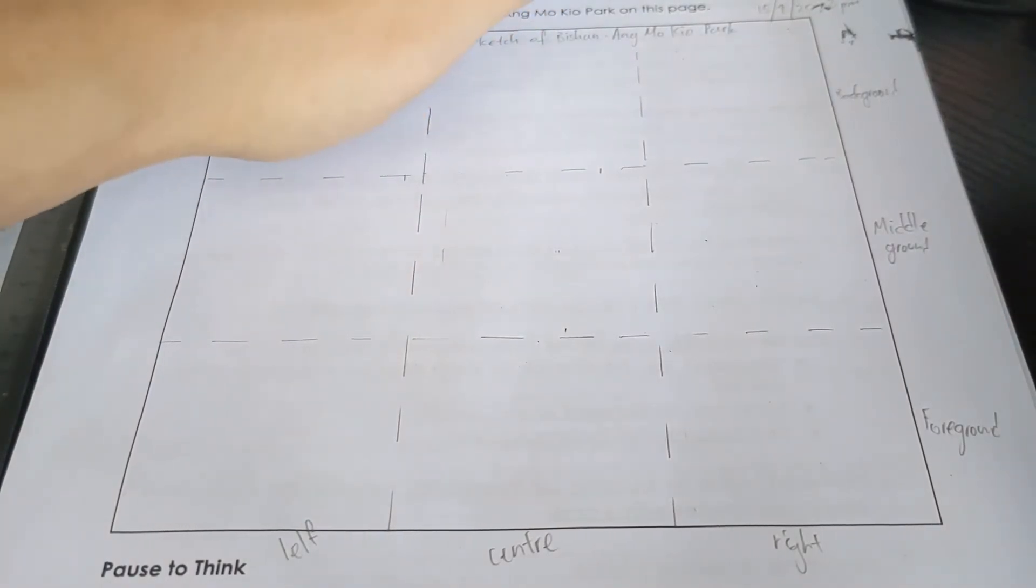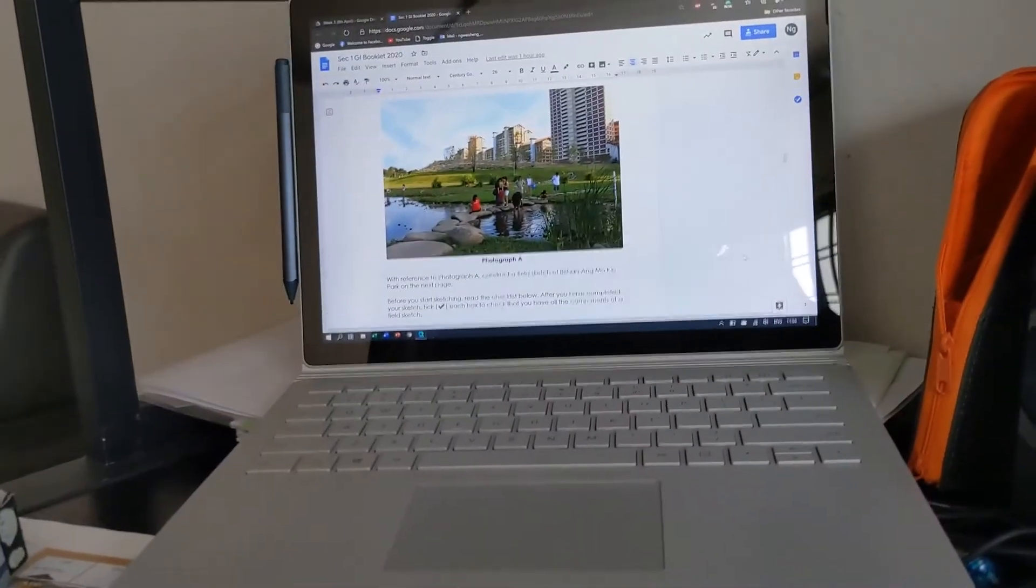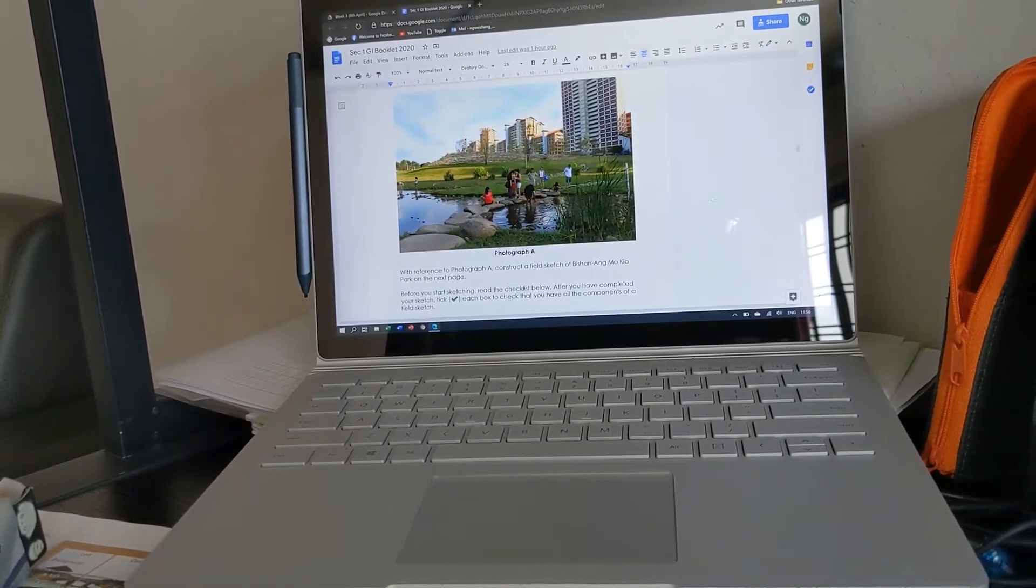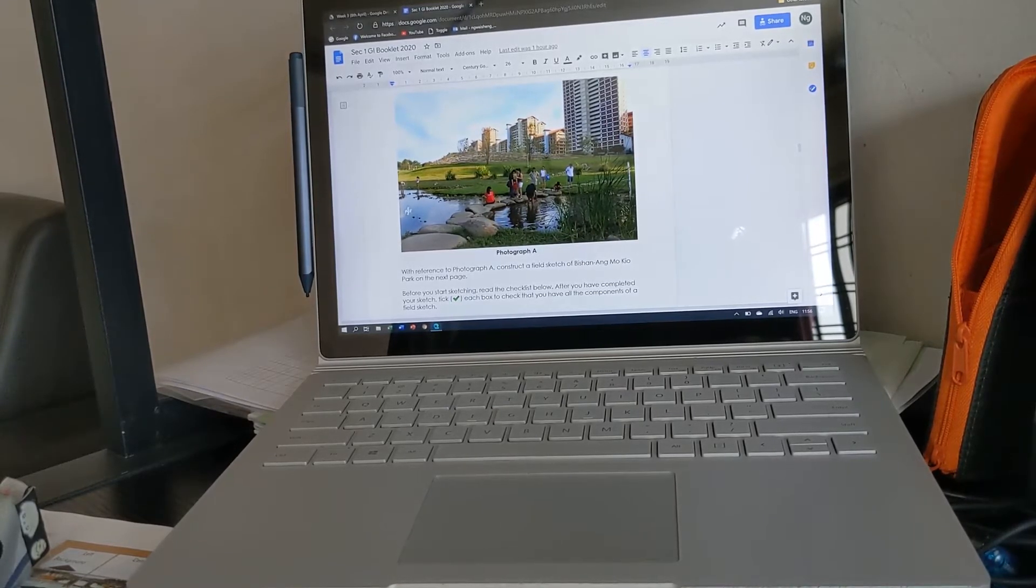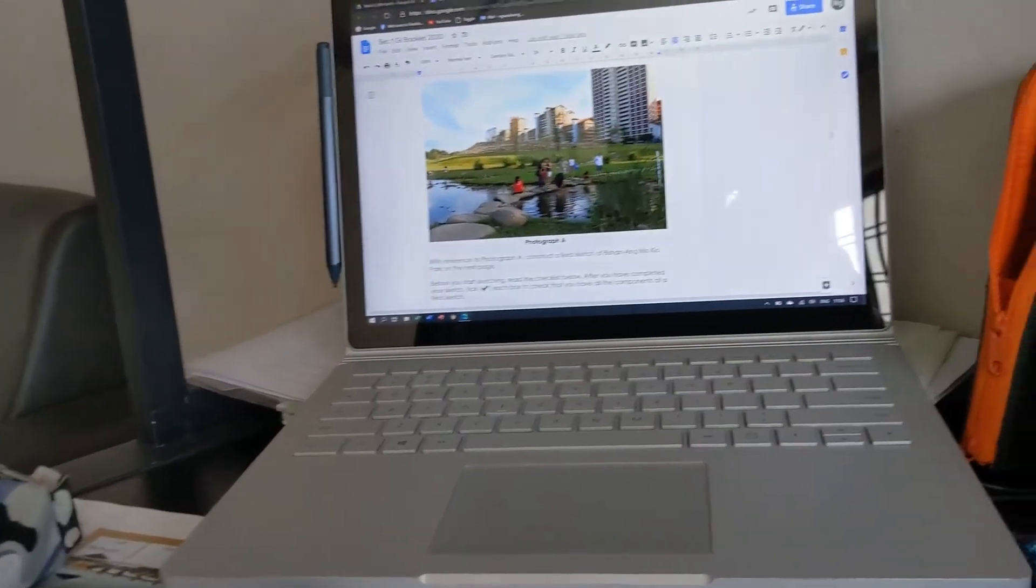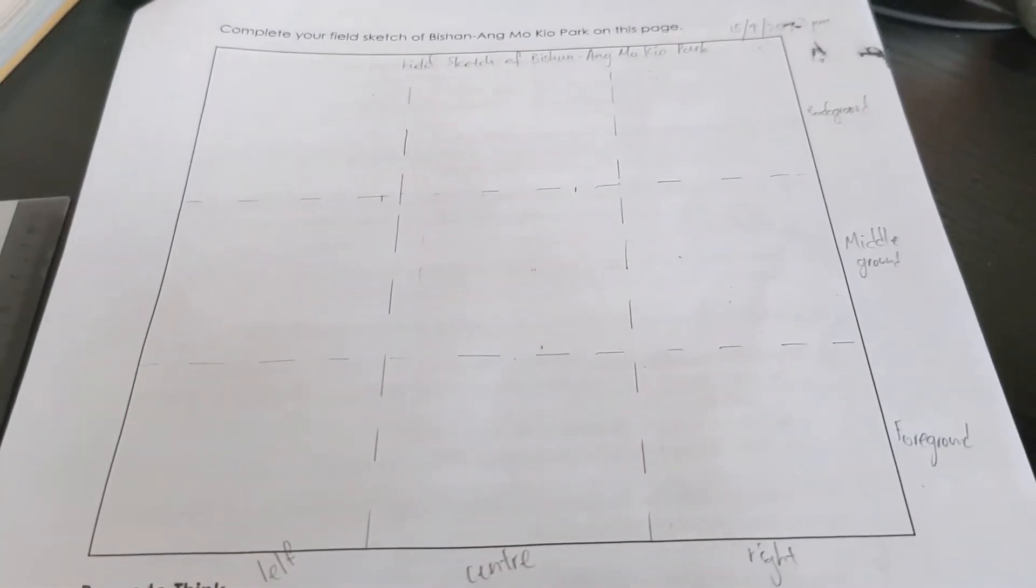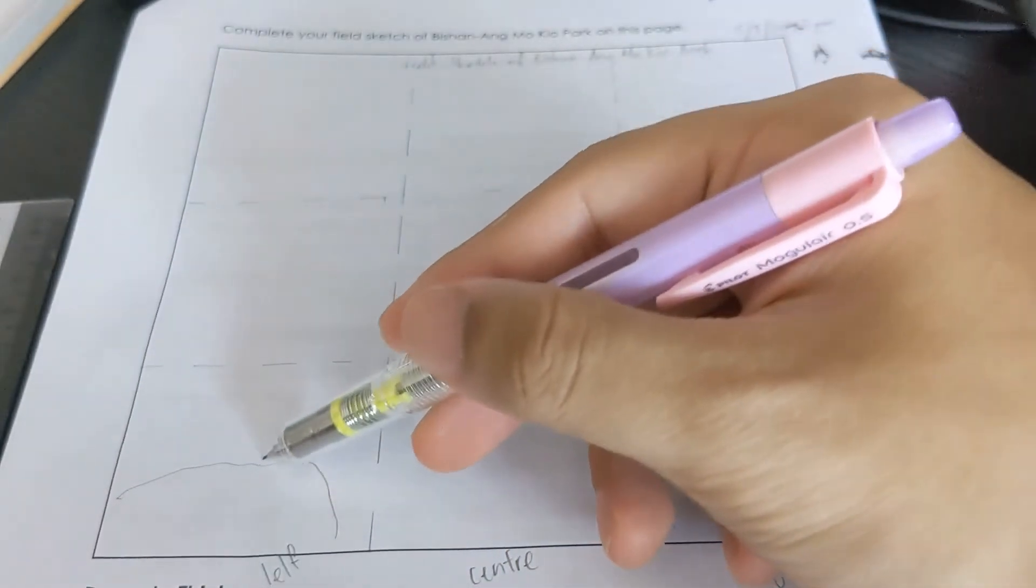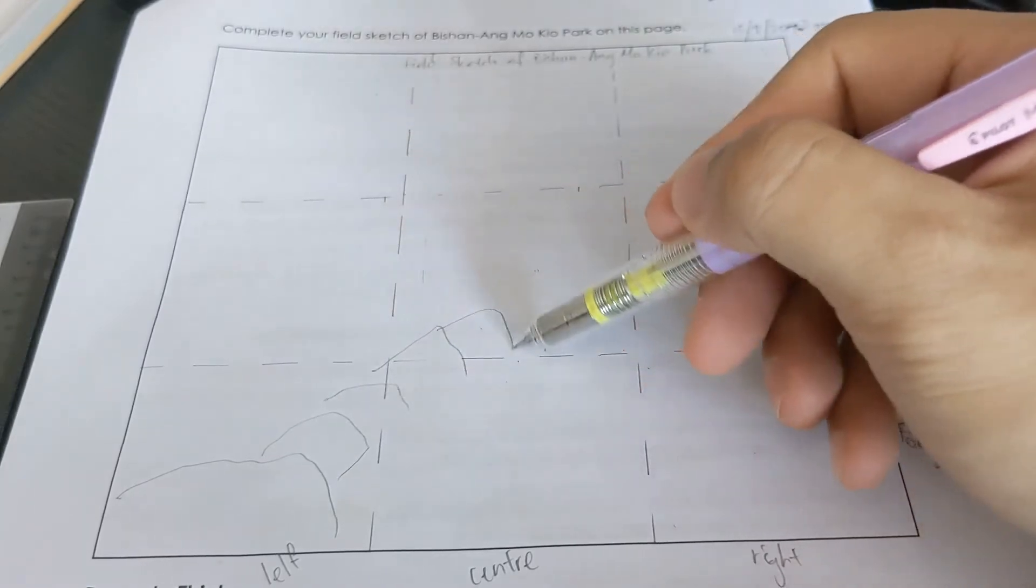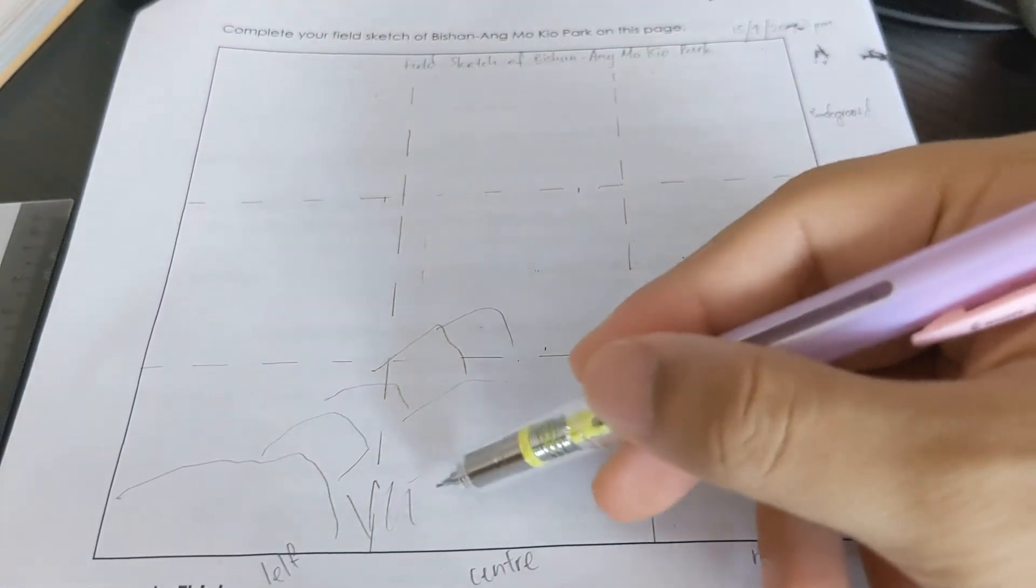So in order to do your sketch, first, look at what you see. Now in this picture over here, my foreground, I see rocks, I see plants, and part of the river. So I can start by going to my foreground box and draw what do I see. So some rocks. It looks like a pathway that is going into the middle ground. Then I see some plants, and more plants over here. So I don't want you to worry about the labeling and annotation first. Draw what do you see.